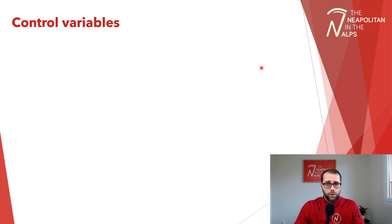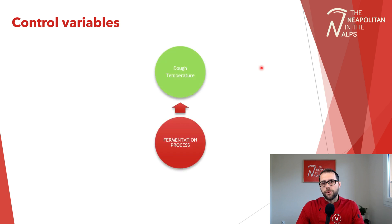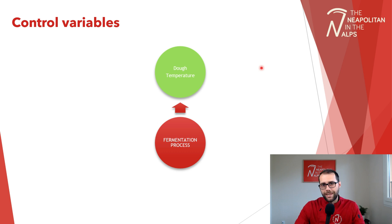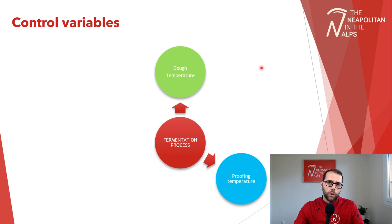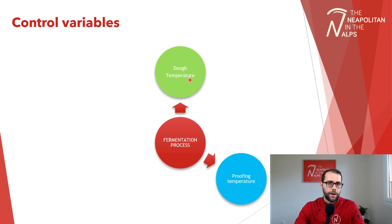What are the control variables that allow us to manage the fermentation process? First, the fermentation process is always impacted by dough temperature — specifically the temperature at the end of kneading. Of course, dough temperature will evolve, and that depends on our second control variable: proofing temperature. At the end of kneading, we have an important rule to choose the right dough temperature so that fermentation goes in the direction we want.